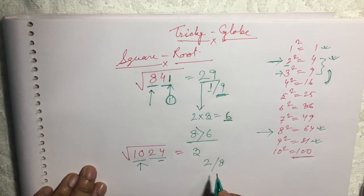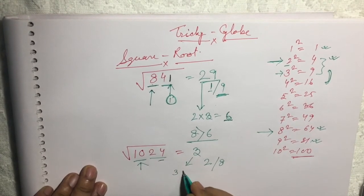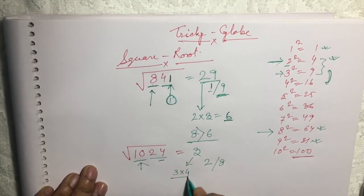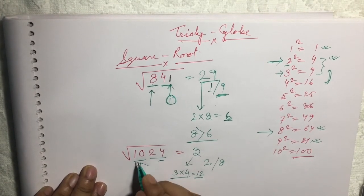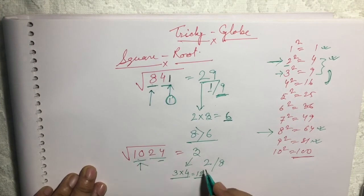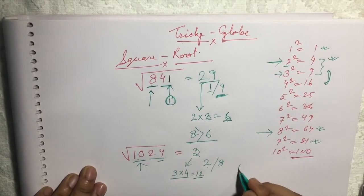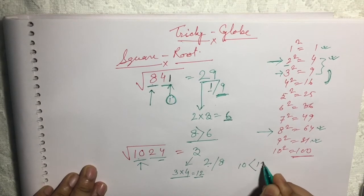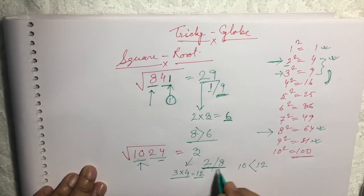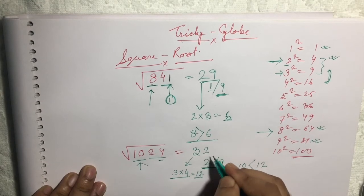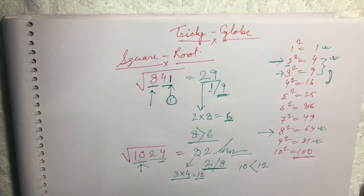To find which one, multiply 3 by the next number: 3 times 4 is 12. Now 10 is smaller than 12, so we take the smaller number among 2 and 8. The smaller number is 2, so the answer is 32. You can check it out with any numbers.